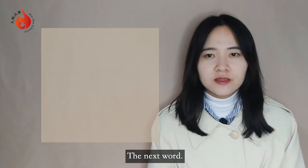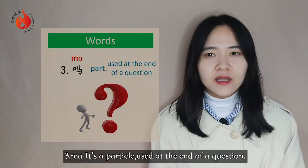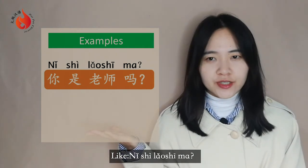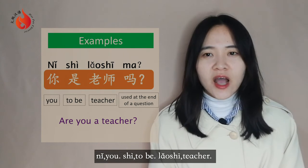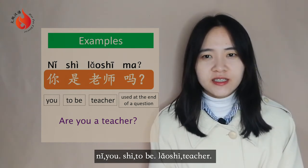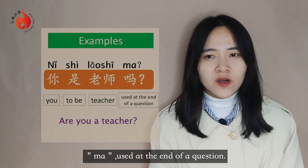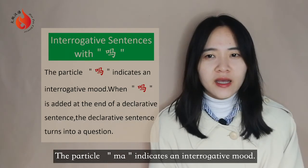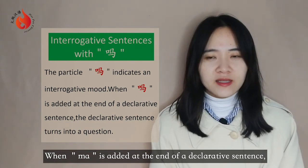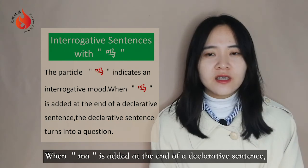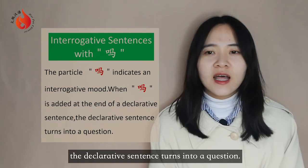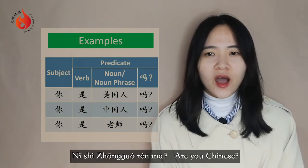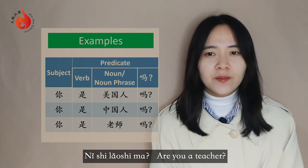你不是老师，你是学生. The next word: 吗 — a question particle used at the end of a question. When 吗 is added at the end of a declarative sentence, it turns into a question. For example: 你是老师吗? — Are you a teacher? 你是美国人吗? — Are you American? 你是中国人吗? — Are you Chinese?